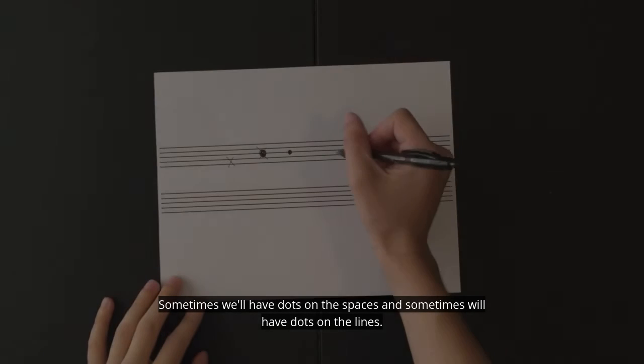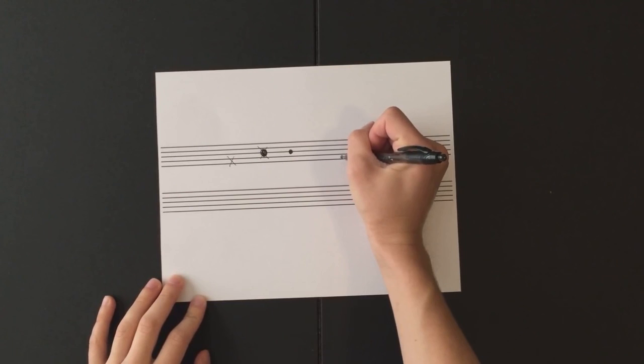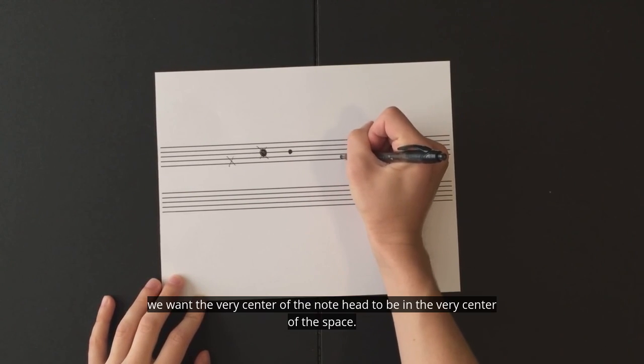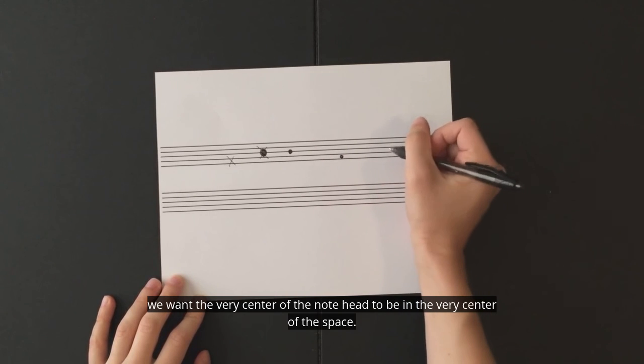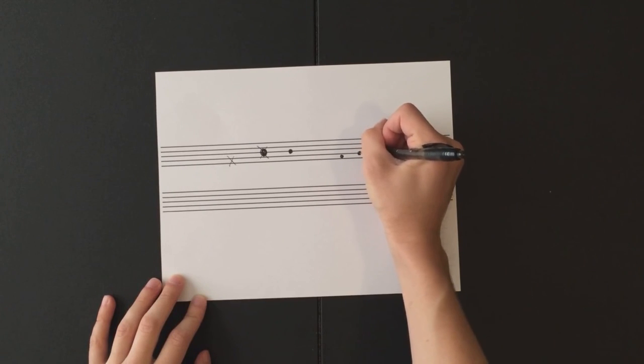Sometimes we'll have dots on the spaces and sometimes we'll have dots on the lines. When we draw a dot on a space, we want the very center of the note head to be in the very center of the space. Likewise, when we draw a note on a line, we want the very center of the note head to be right on the line.